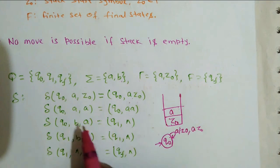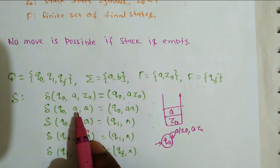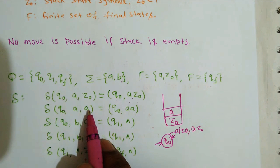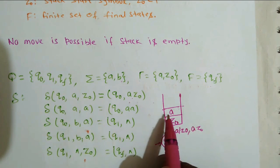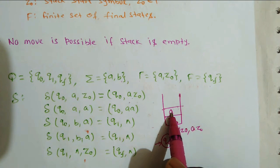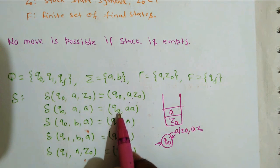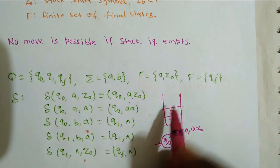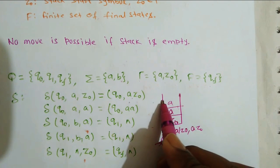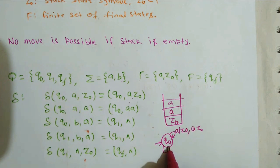Now on state q-naught, after reading 'a' with the top of the stack being 'a', it stays on the same state q-naught and the top two elements will now be two a's — you can write it like this.